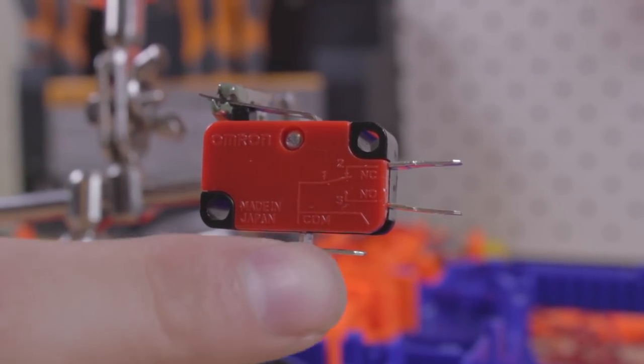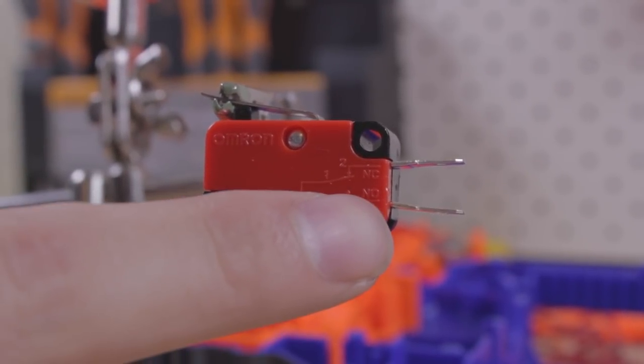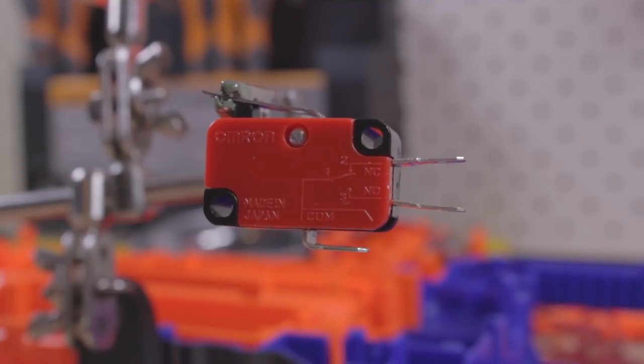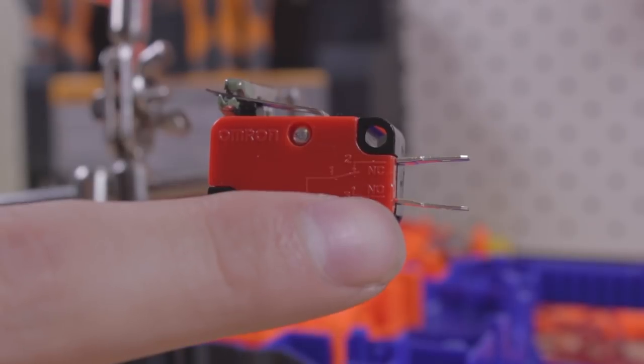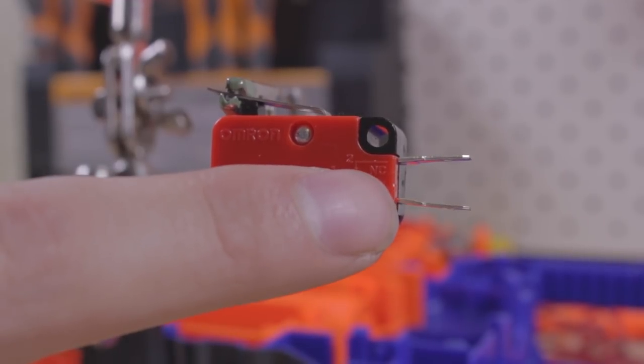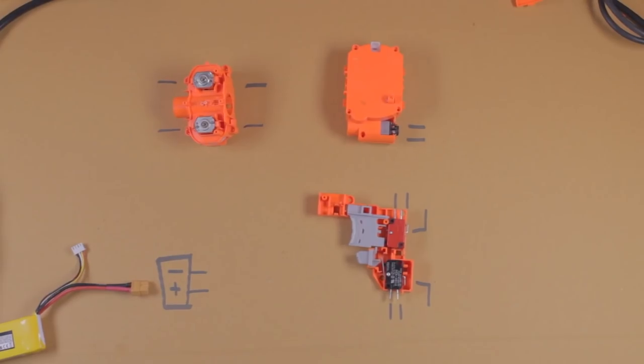First, make sure to identify the common, normally open and normally closed tabs on your switch. The positions for the COM, NO tabs and the NC tabs on your switch will change where you need to wire to. Let's go over the circuit.